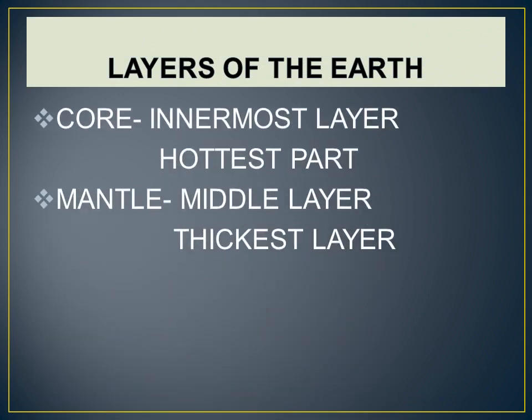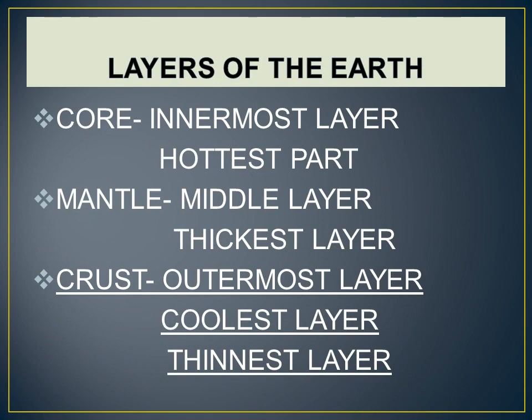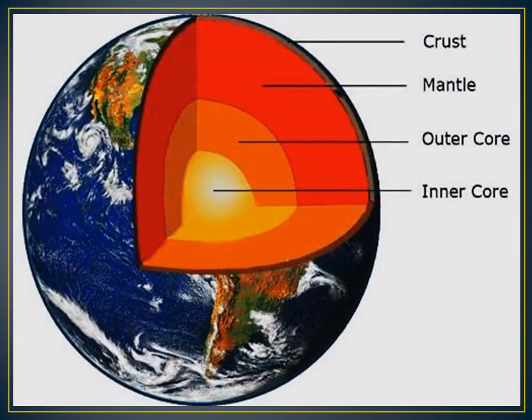The outermost layer of the Earth is called the crust. It is the coolest and thinnest layer. Life exists on this layer; oceans and mountains are also present on this layer. It is made of rocks such as granite and basalt. The crust is divided into different plates. You will underline both rock names: granite and basalt.